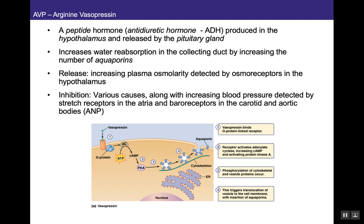To summarize the arginine vasopressin pathway: AVP is a peptide hormone and antidiuretic hormone produced in the hypothalamus and released by the posterior pituitary gland. It increases water reabsorption in the collecting duct by increasing the number of aquaporin channels. Its release depends on osmoreceptors — if plasma osmolarity increases, those osmoreceptors in the hypothalamus promote a profound thirst behavior and vasopressin release from the posterior pituitary. This entire cascade is inhibited by atrial natriuretic peptide.